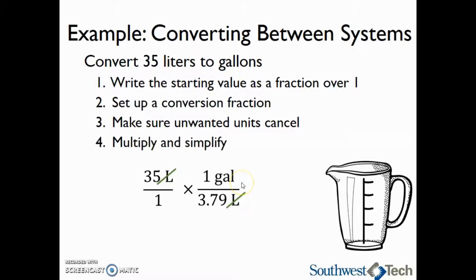So the last thing that we need to do here is multiply and simplify. So when we are multiplying fractions, we multiply everything across on the top, everything across on the bottom, and then divide. So 35 times 1 gallon is 35. 1 times 3.79 is 3.79. So 35 divided by 3.79 is approximately 9.23 gallons.